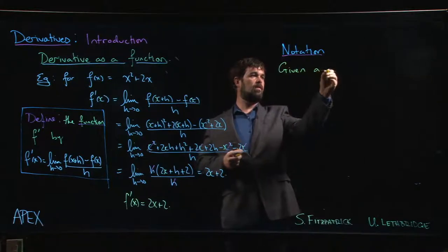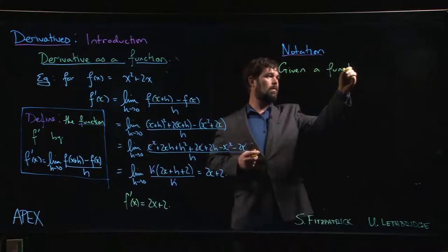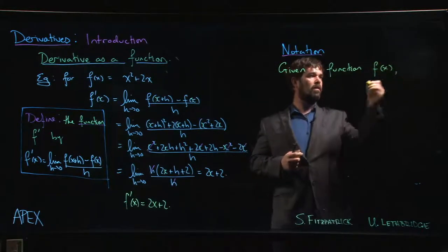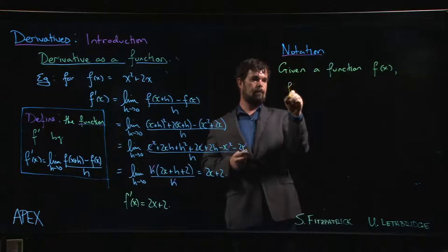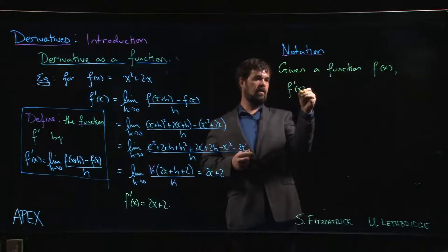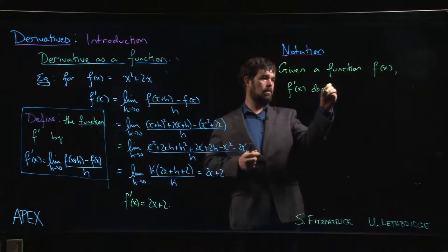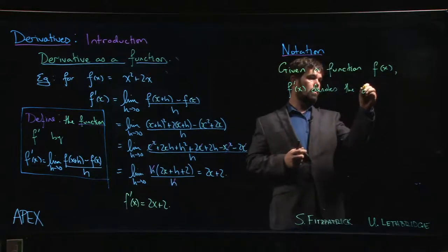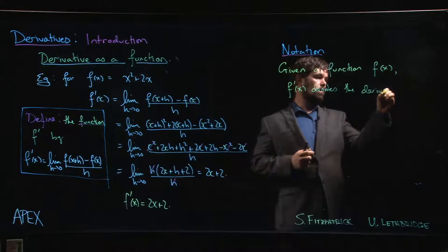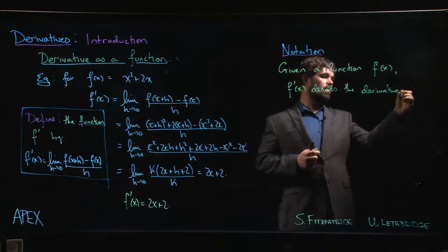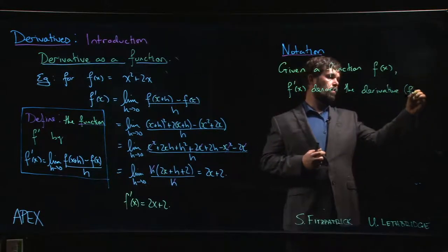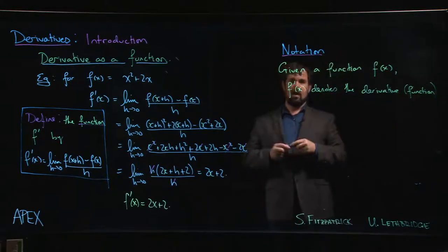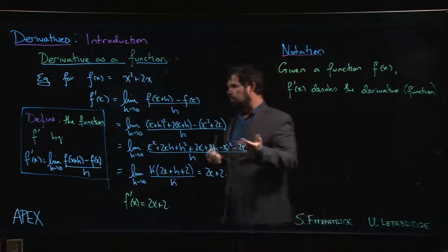Given a function f of x, we can say that f prime of x denotes the derivative - and here we mean of course the derivative function. So this prime notation is convenient when you want to talk about derivatives at a point.